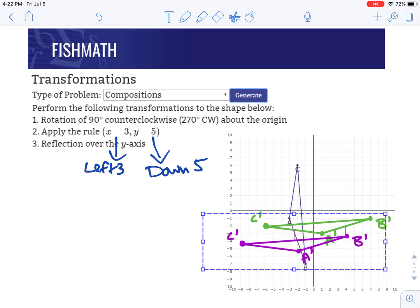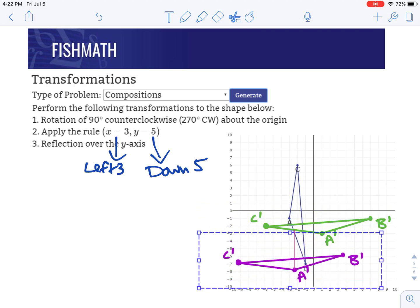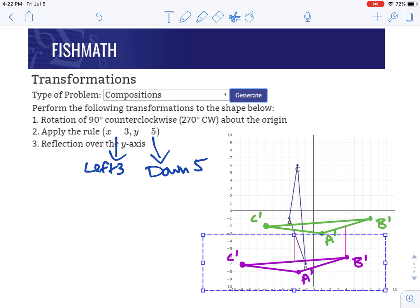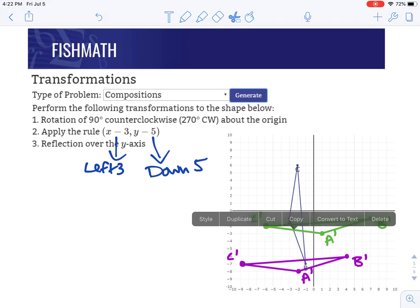Then we're going to go down five. So one, two, three, four, five, and then we'll get our new location of our shape after both transformations have now been done. We've got our rotation done and our translation done, and that worked pretty well.